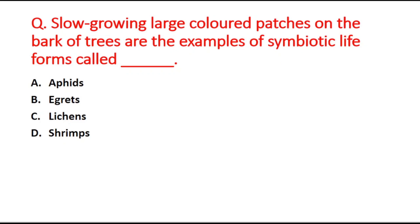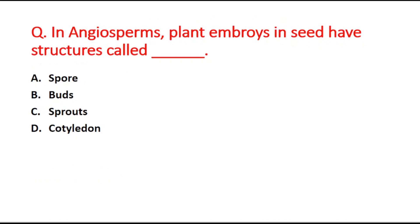Next question: slow-growing large colored patches on the bark of trees are examples of symbiotic life forms called blank. Option A is aphids, option B is egrets, option C is lichens, and option D is shrimps. The right answer is option C, lichens.